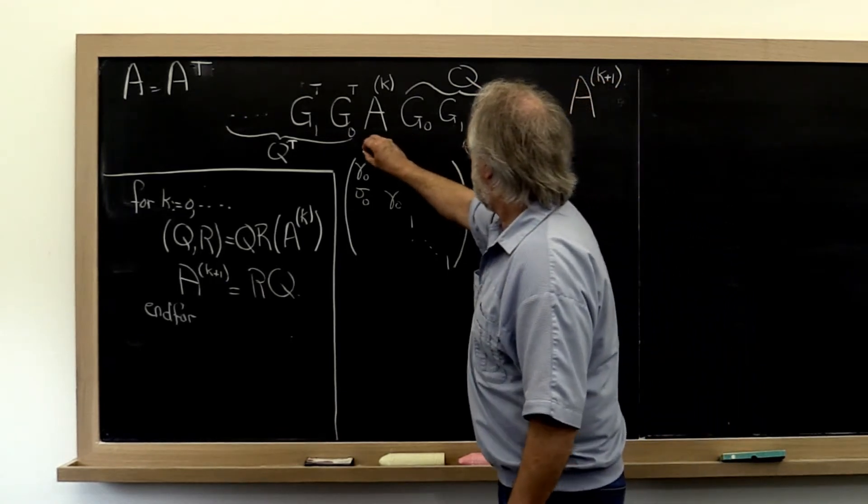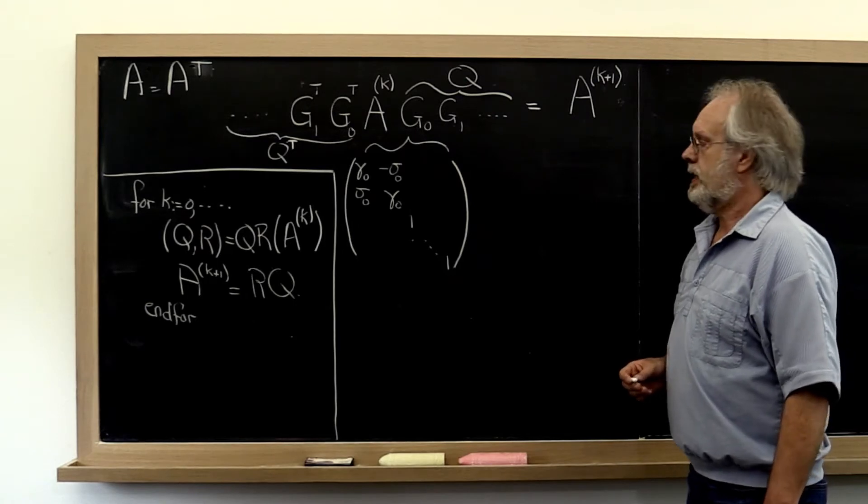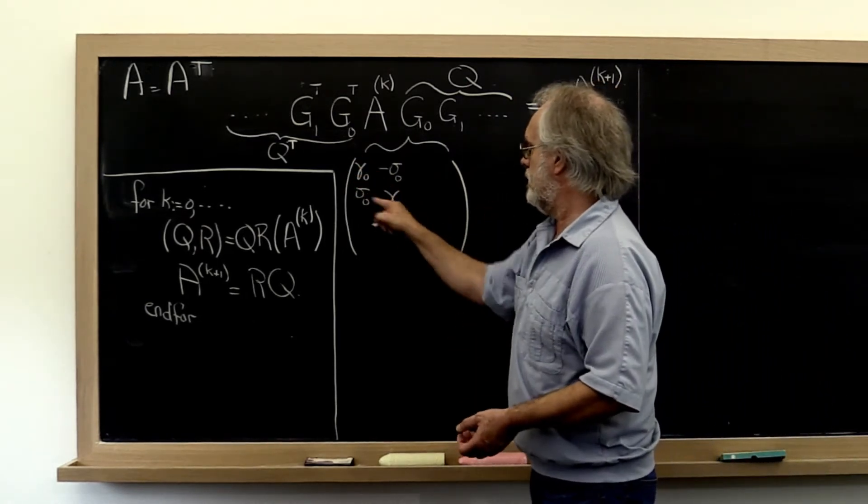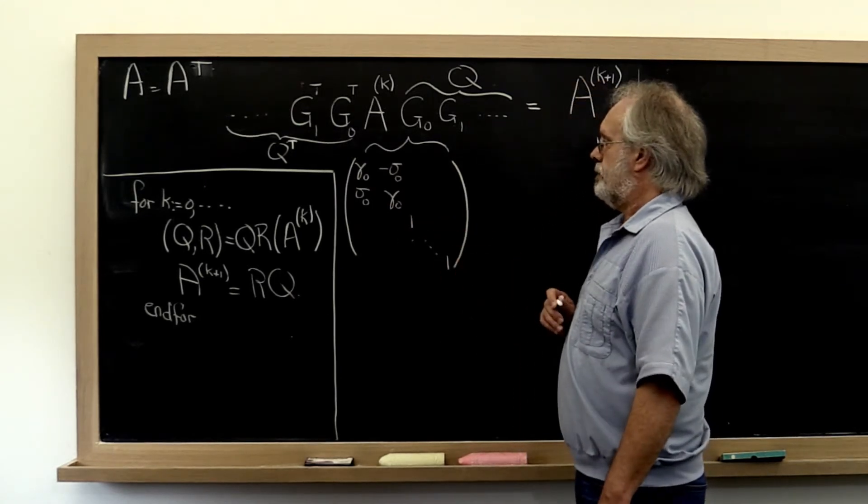Let's have a look at this first Givens rotation. Really it's a matrix where you have this little rotation sitting right here, and then you have the identity matrix for the rest.